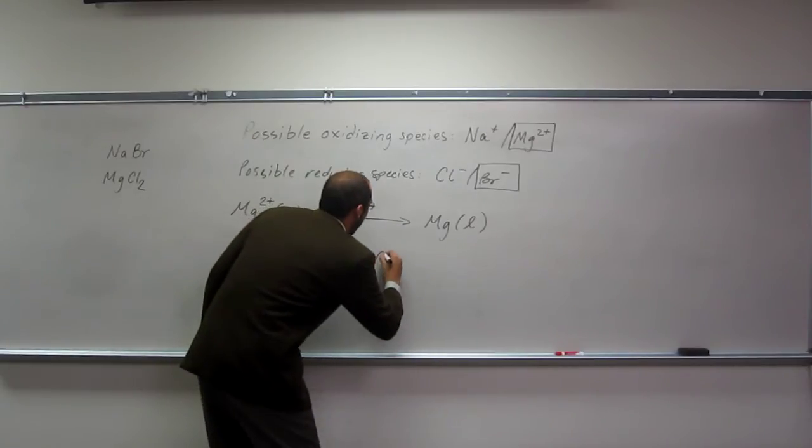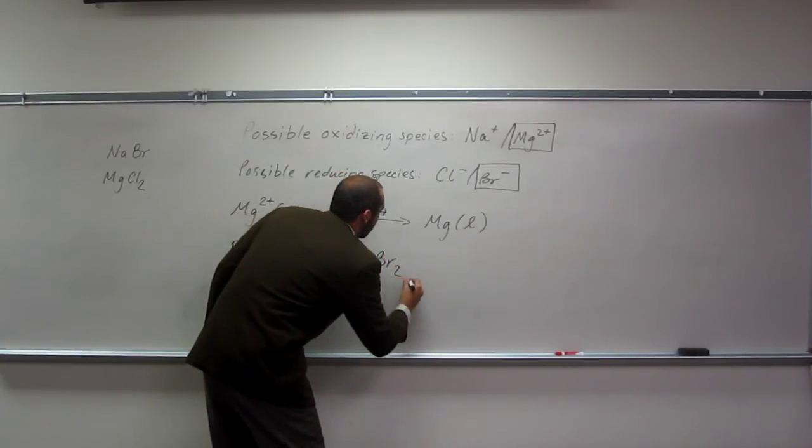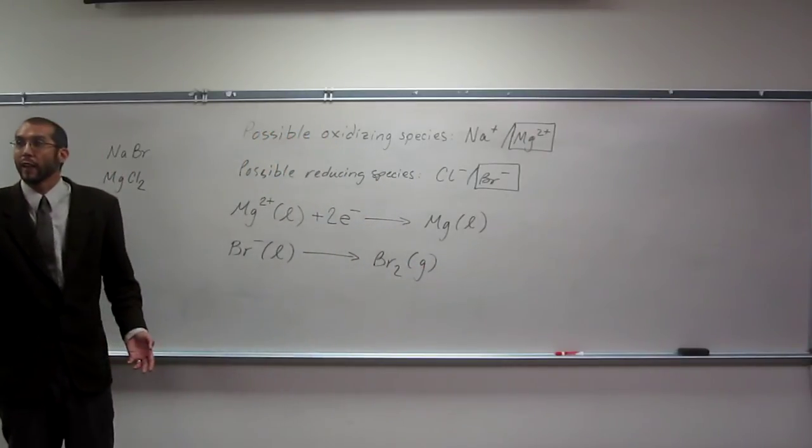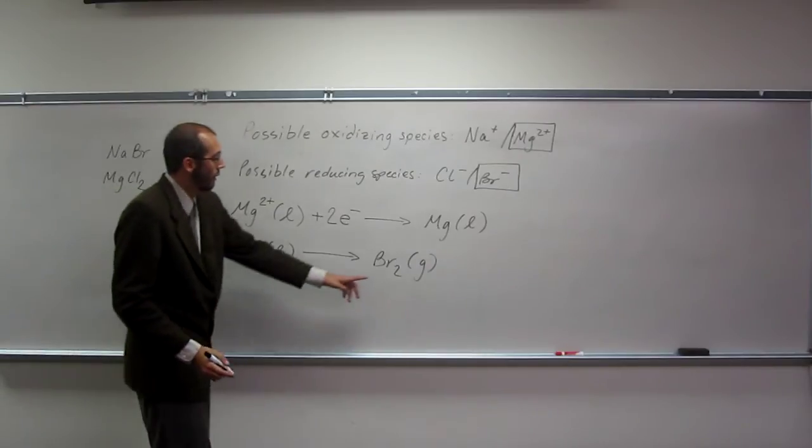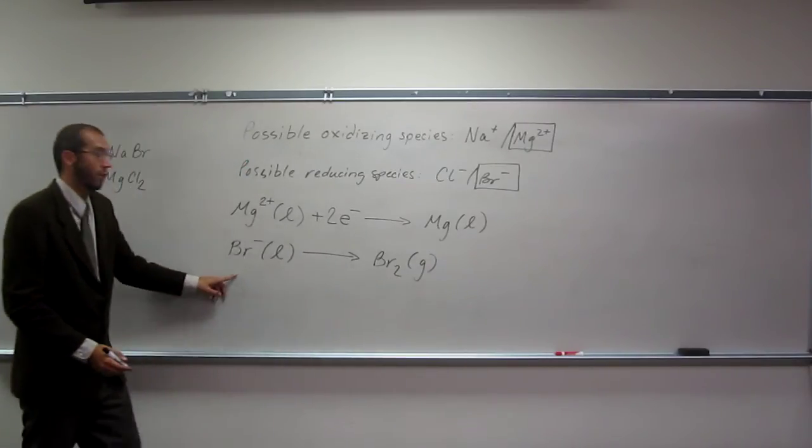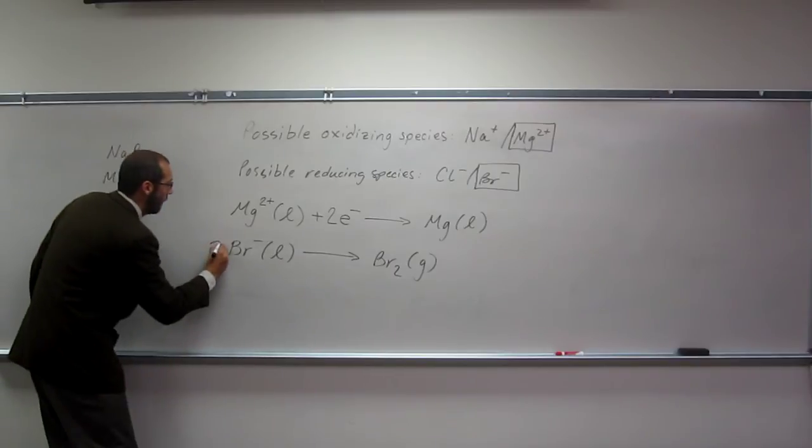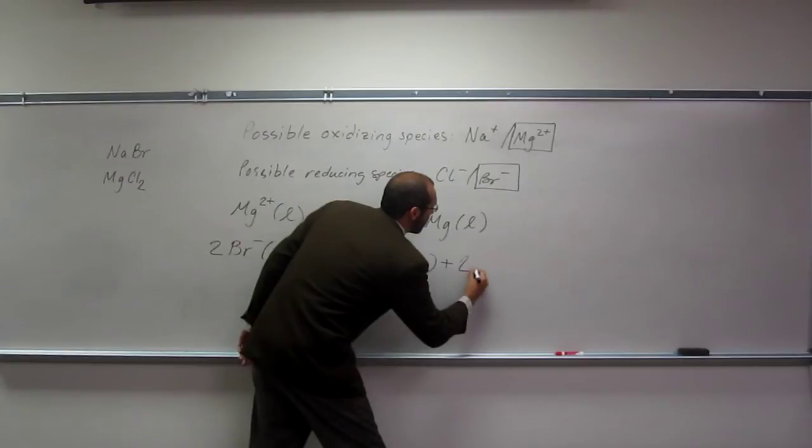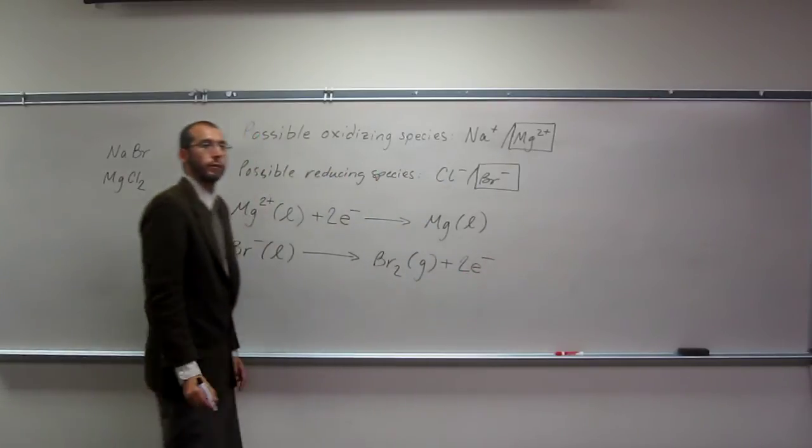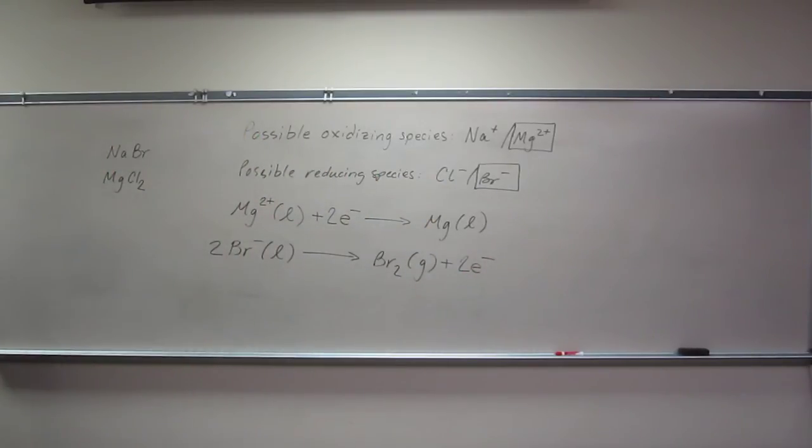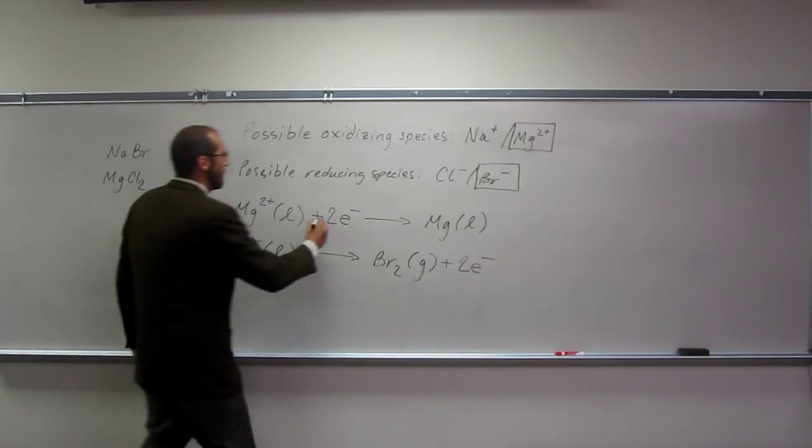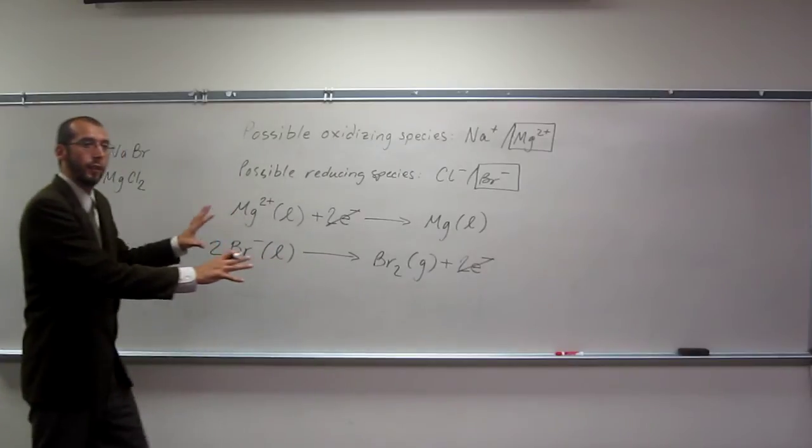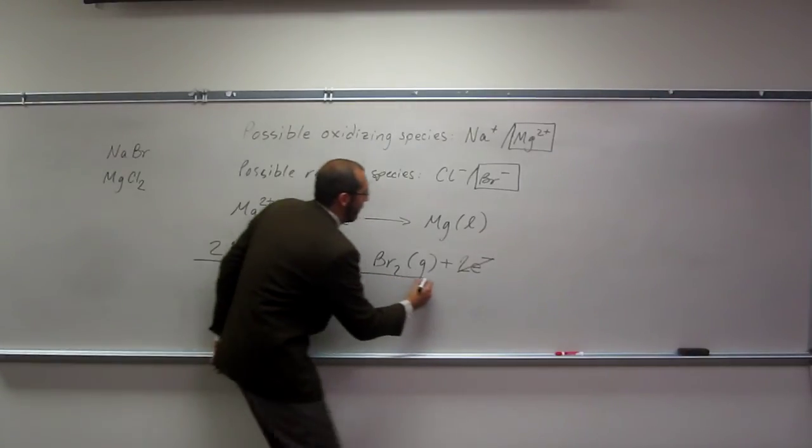That goes to Br2, and that's going to be a gas. Notice we've got two Br's there, so we have to have two Br's over here: 2Br-(l) → Br2(g). With two minuses, that means we've got two electrons there: 2Br-(l) → Br2(g) + 2e-. These electrons are equivalent, so we can cancel them out.